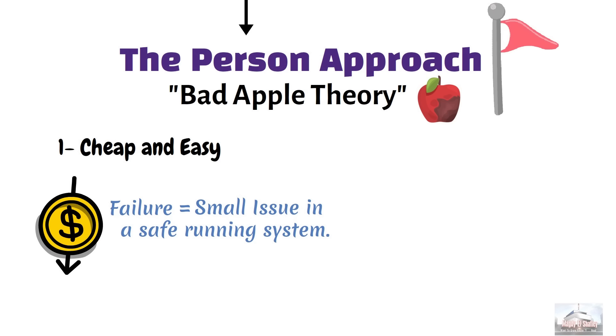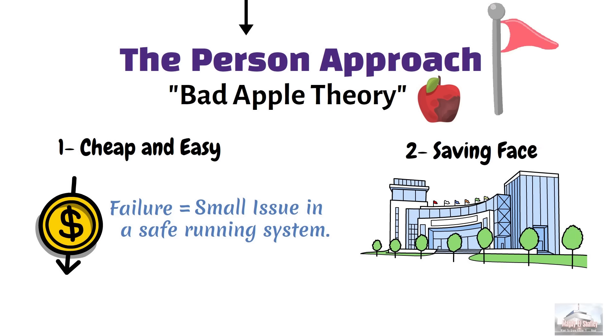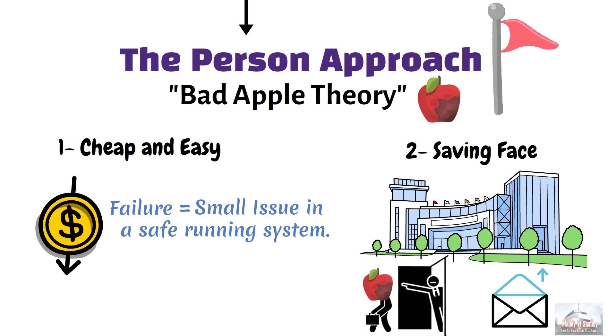According to this view, there's no need for expensive investigations, major changes, or deep system improvements. Second, it is saving face. After a failure, often there's pressure to protect the public image. Removing the so-called defective practitioners sends a clear message. The problem isn't with the system. It's just a small, local glitch in a smooth operation.